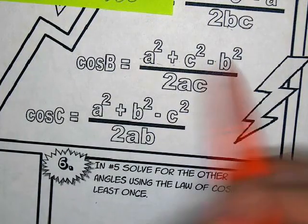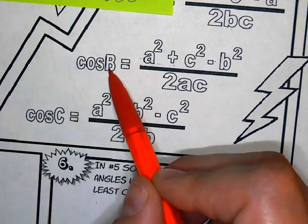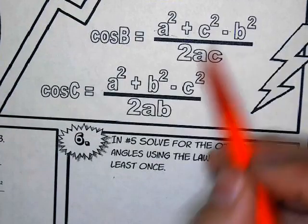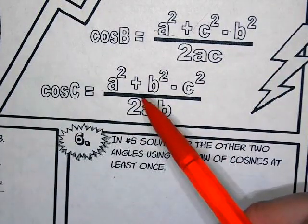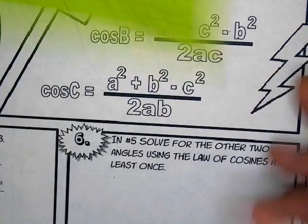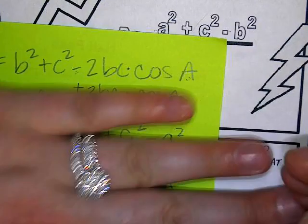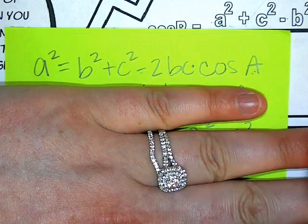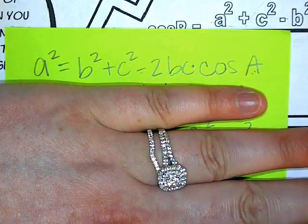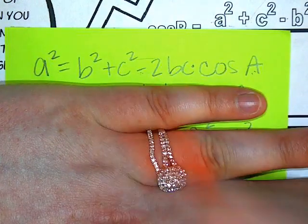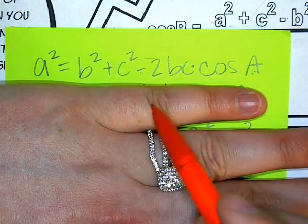I've never taught it like this before because that's like memorizing a whole other formula. I usually just had my students work with this and do the solving every single time. Do you guys have a preference — memorize another formula, or start with this and solve it each time? Solve each time? Yeah, better. Okay.